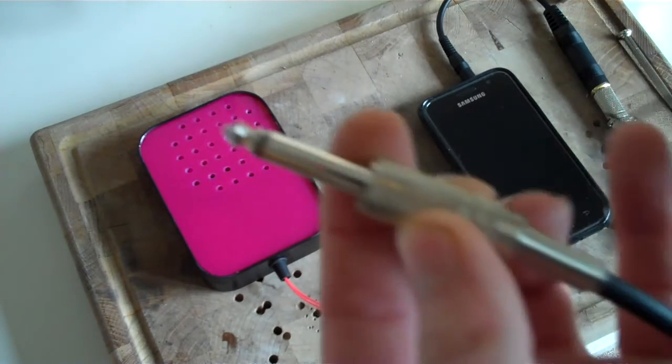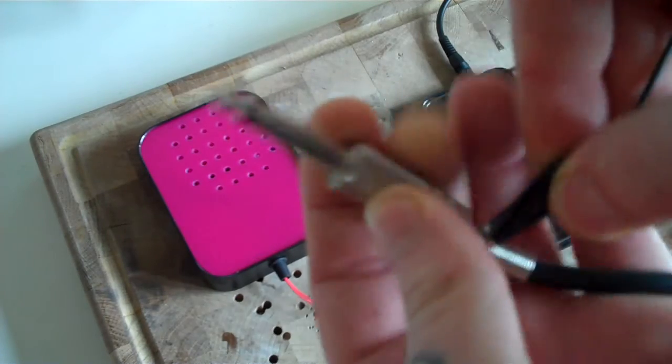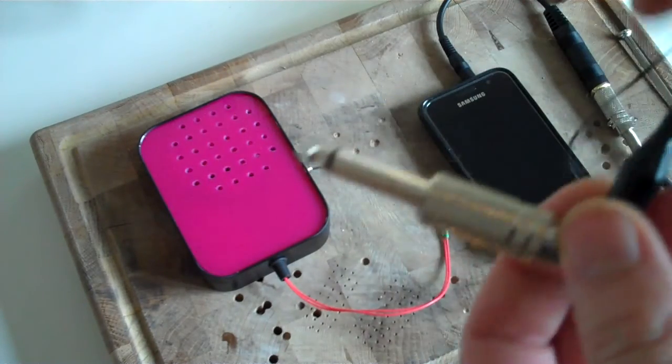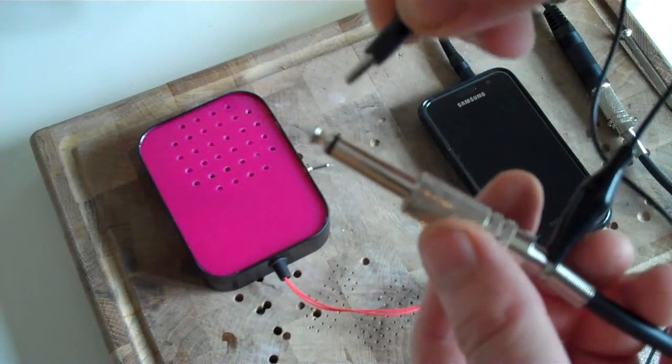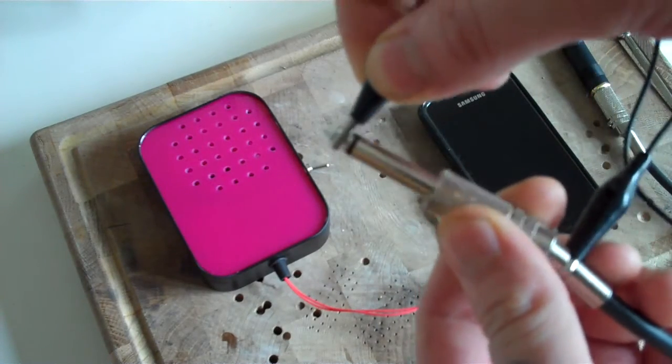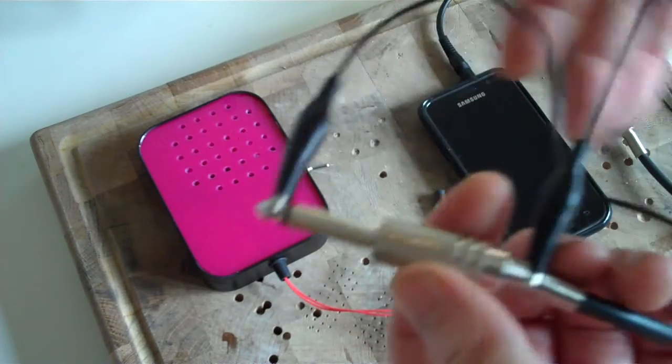And what you do is you take something like a crocodile clip or a piece of wire, and you will bridge the tip with the sleeve of the jack.